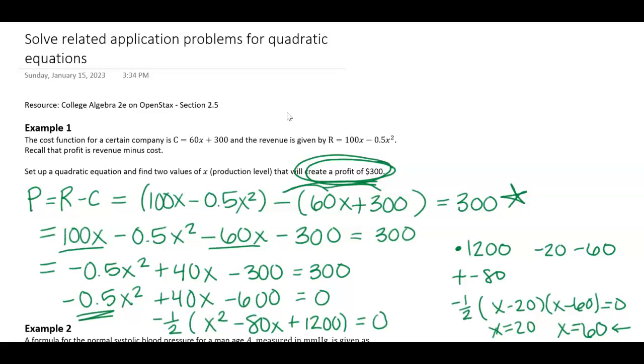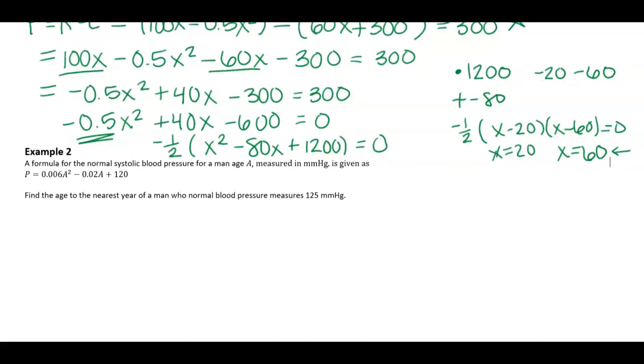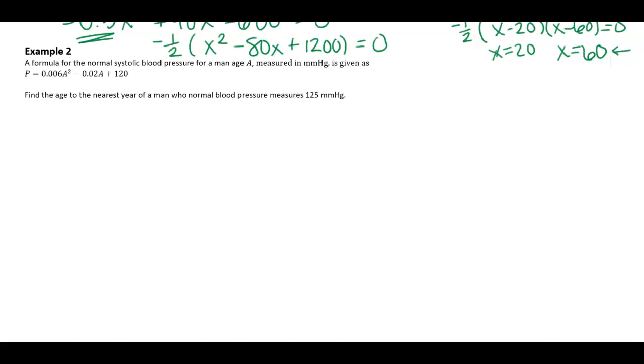Alright, let's look at a different problem. This one is about blood pressure. A formula for the blood pressure of a man at any age is given by our formula right here. Find the age to the nearest year of a man whose blood pressure measures 125.